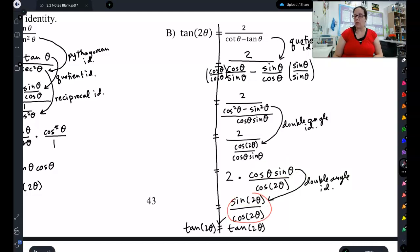2 cosine sine is another double angle identity for sine of 2θ. And now I have sine of 2θ over cosine of 2θ, which is the same thing as tangent of 2θ. So I used my quotient identity to turn it back into tangent.